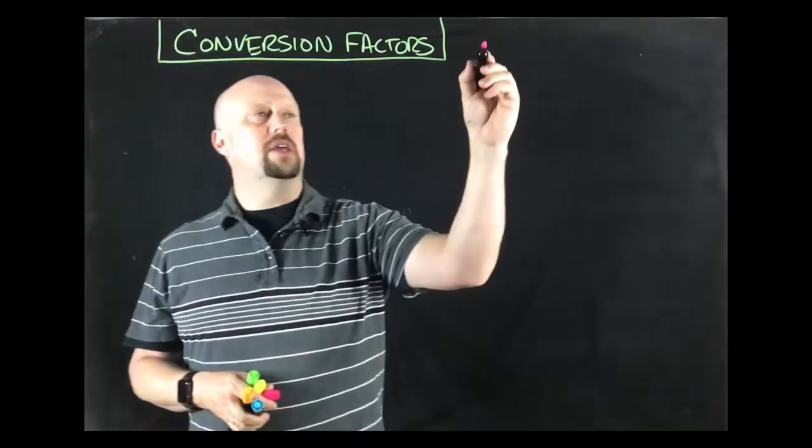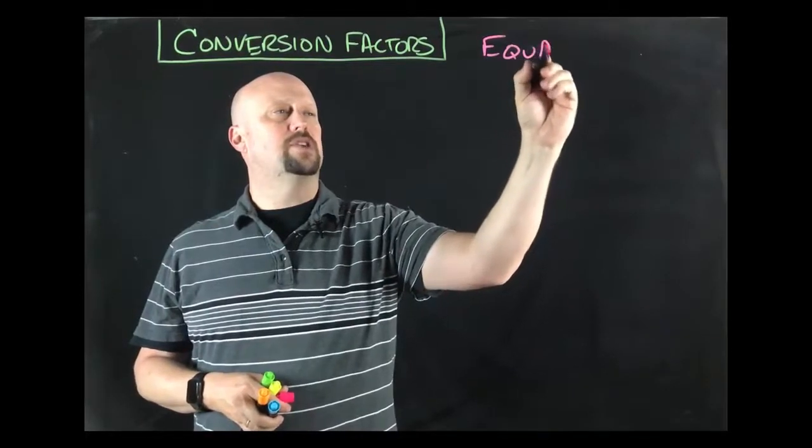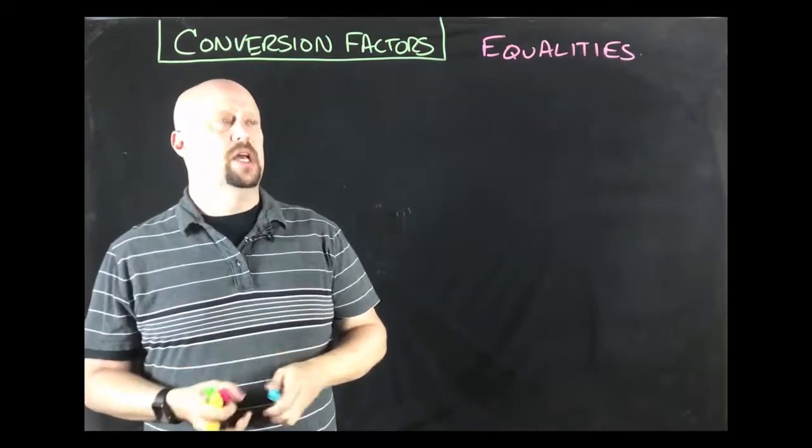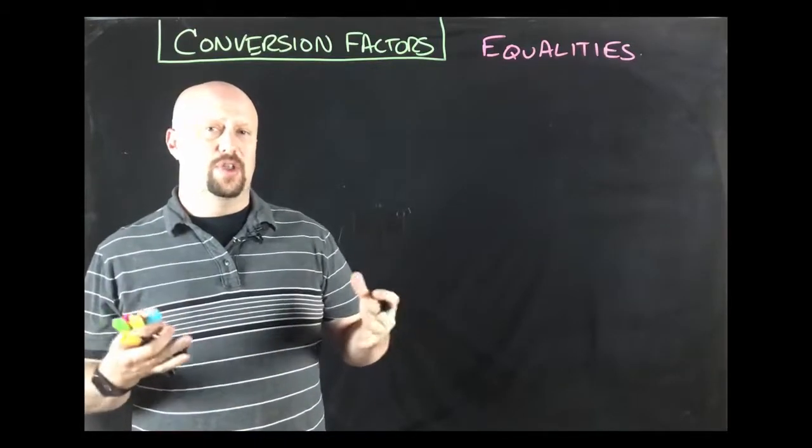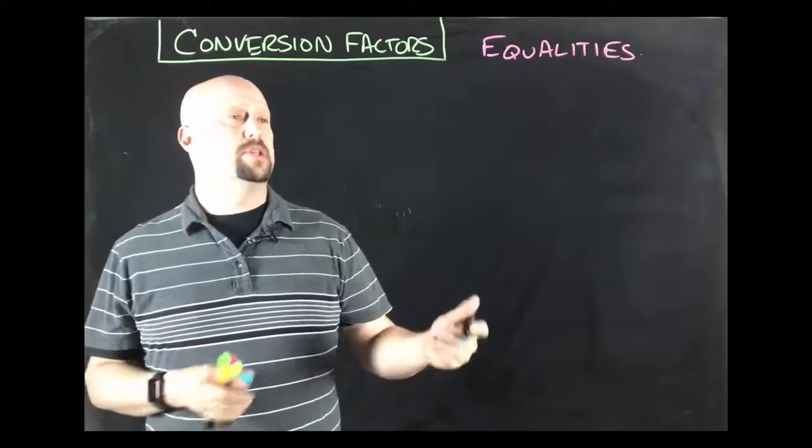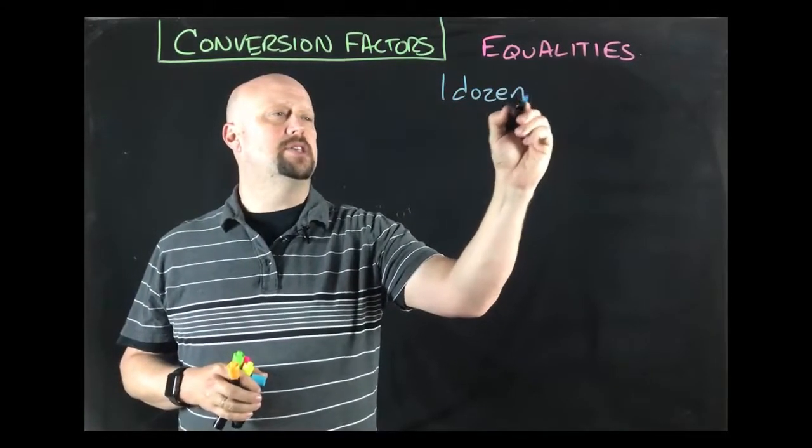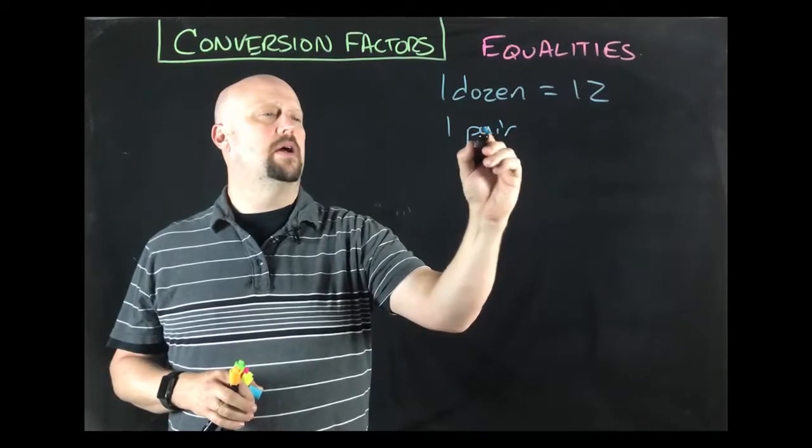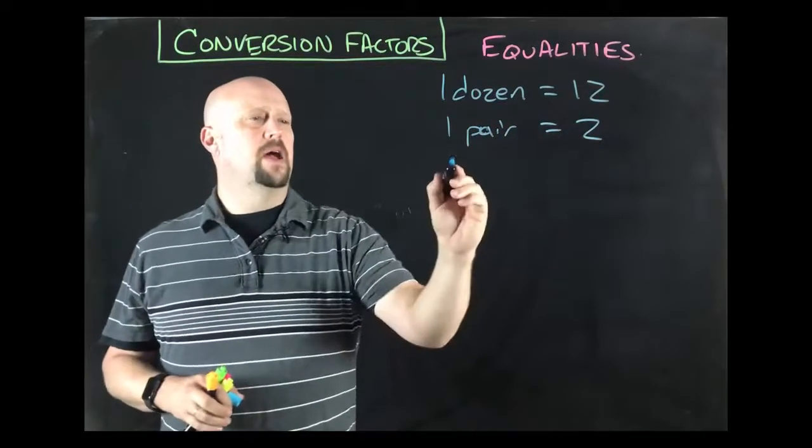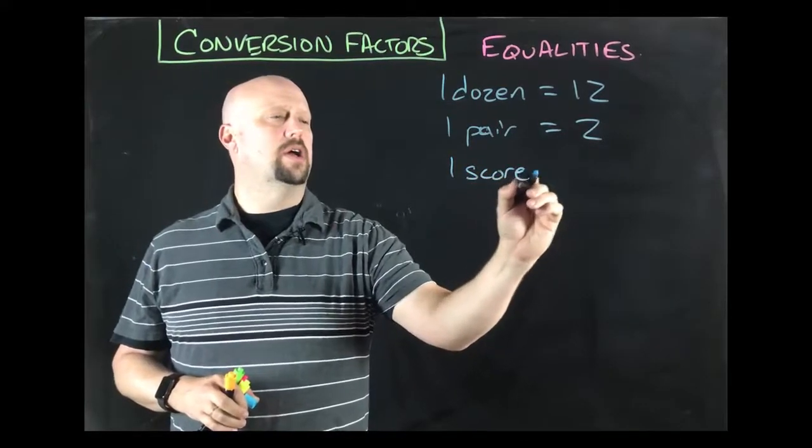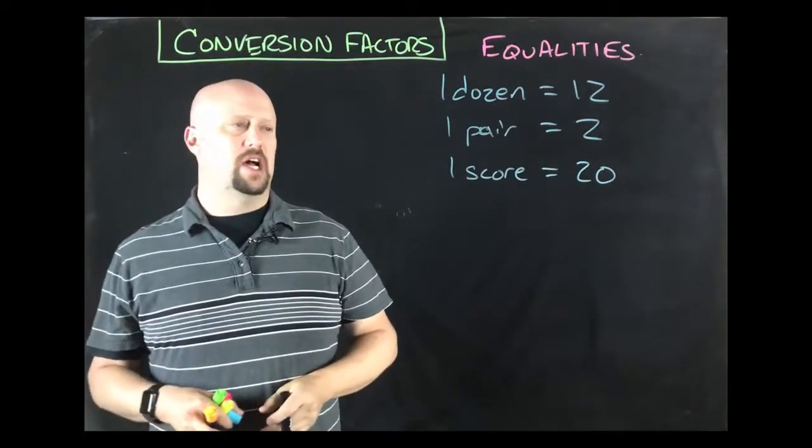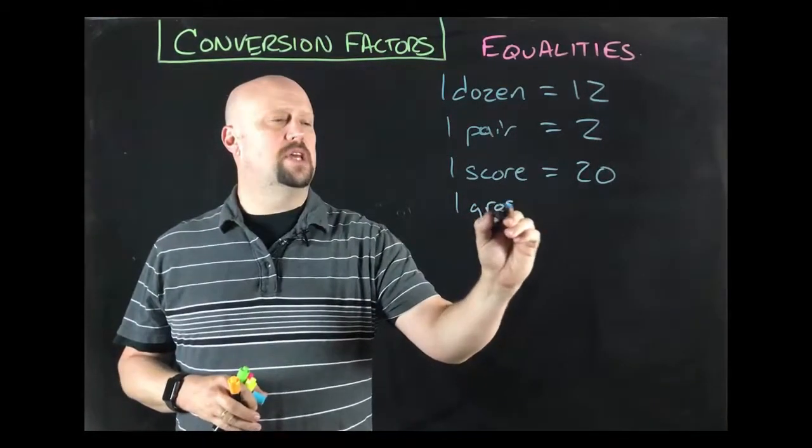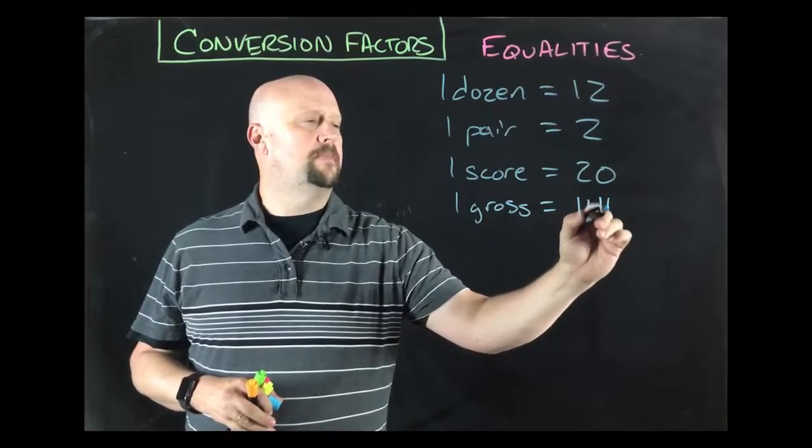So let's start off with what I think is the basics for conversion factors with this, which is something called equalities. Equalities are pretty straightforward. I mean, equalities basically just mean two things that are equal to each other in a given situation. Now they could be equal to each other all the time, but certainly in a given situation. So for instance, a dozen is equal to 12. One pair is equal to two of something. We could say that there was a score of something, you know, like in Abraham Lincoln's Gettysburg address, four score and seven years ago. So a score is 20.